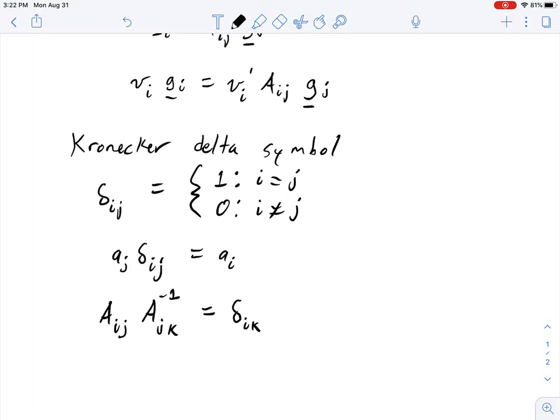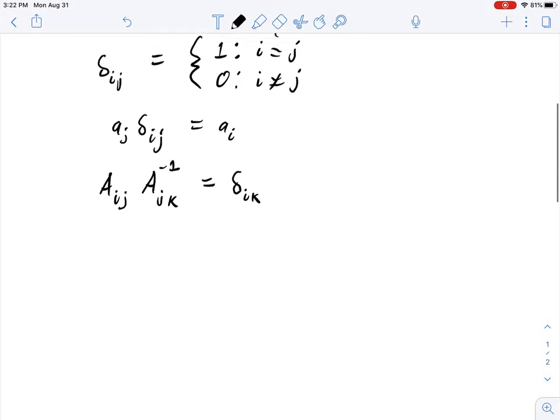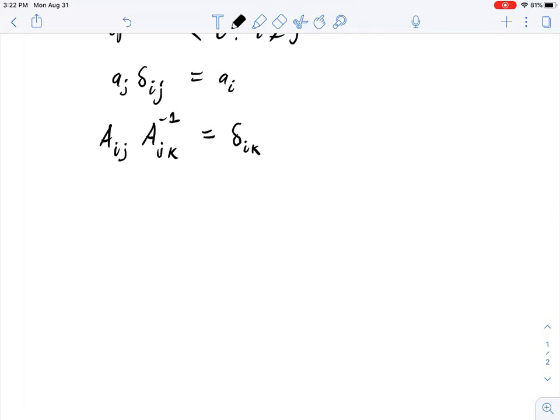Going back to our equation up here that we're going to be manipulating, it ends up being a little easier if we change some of the indices around. Instead of vi gi, we'll look at vj gj equals vi prime.